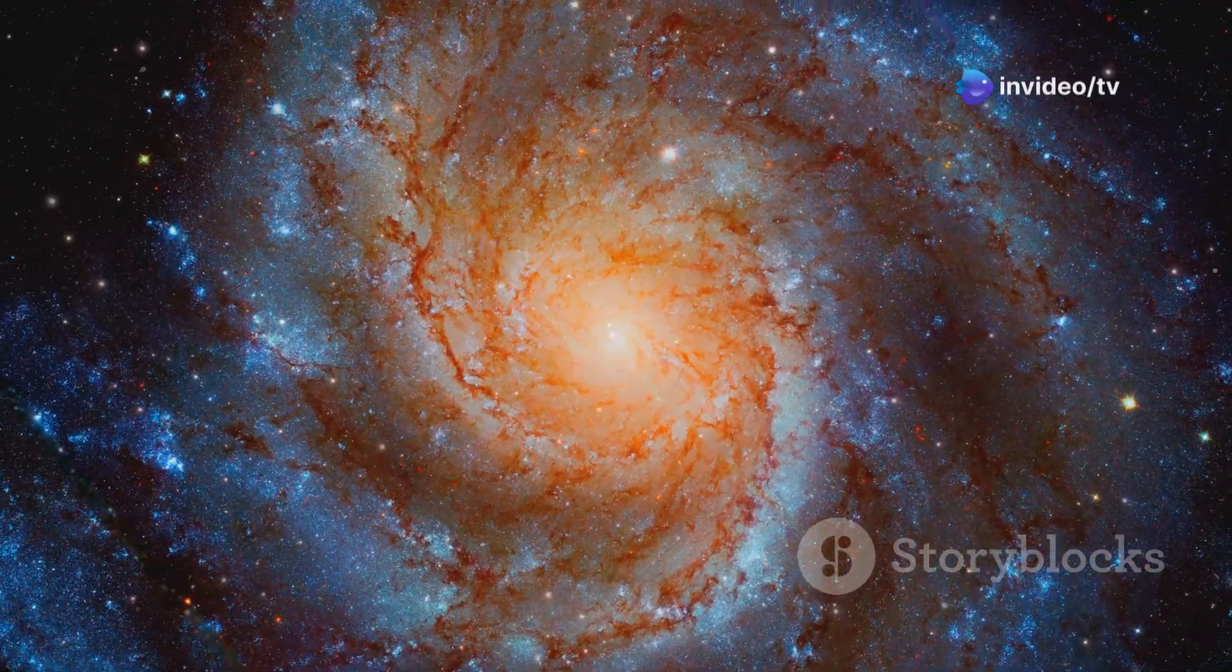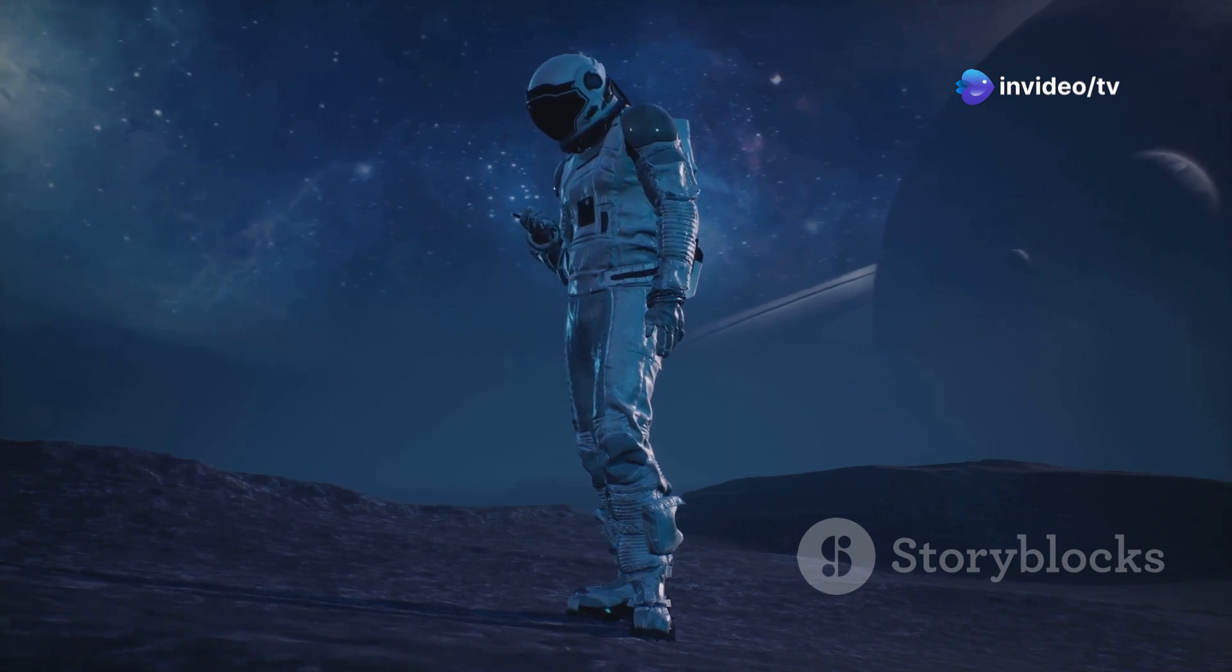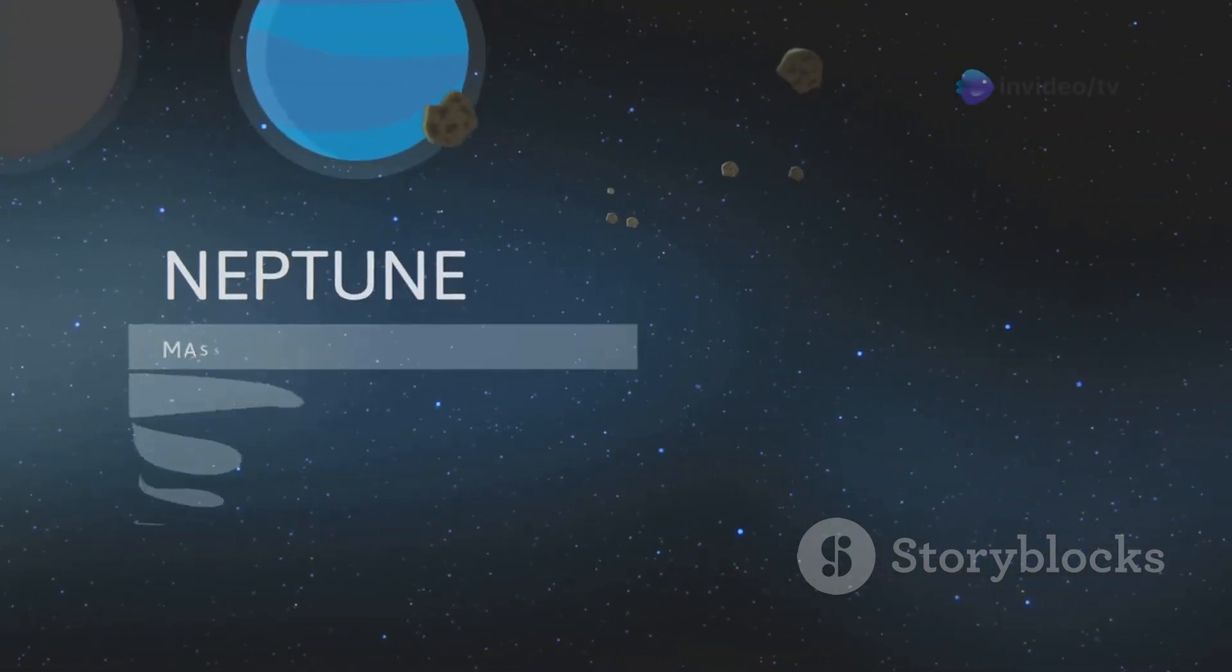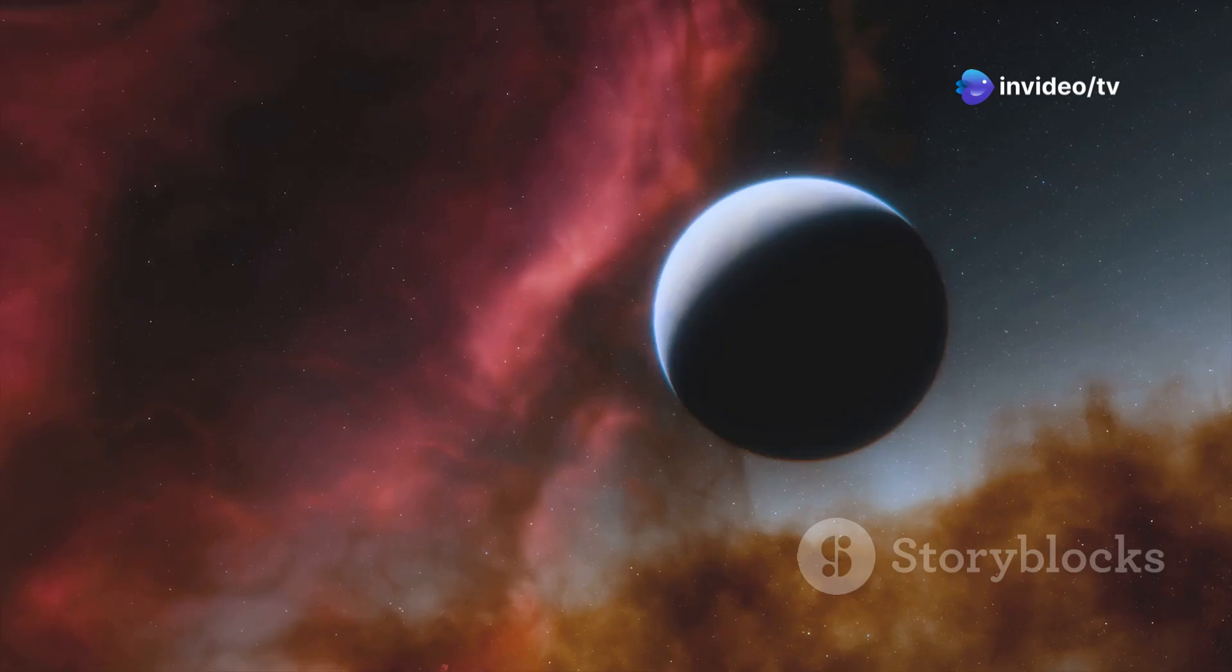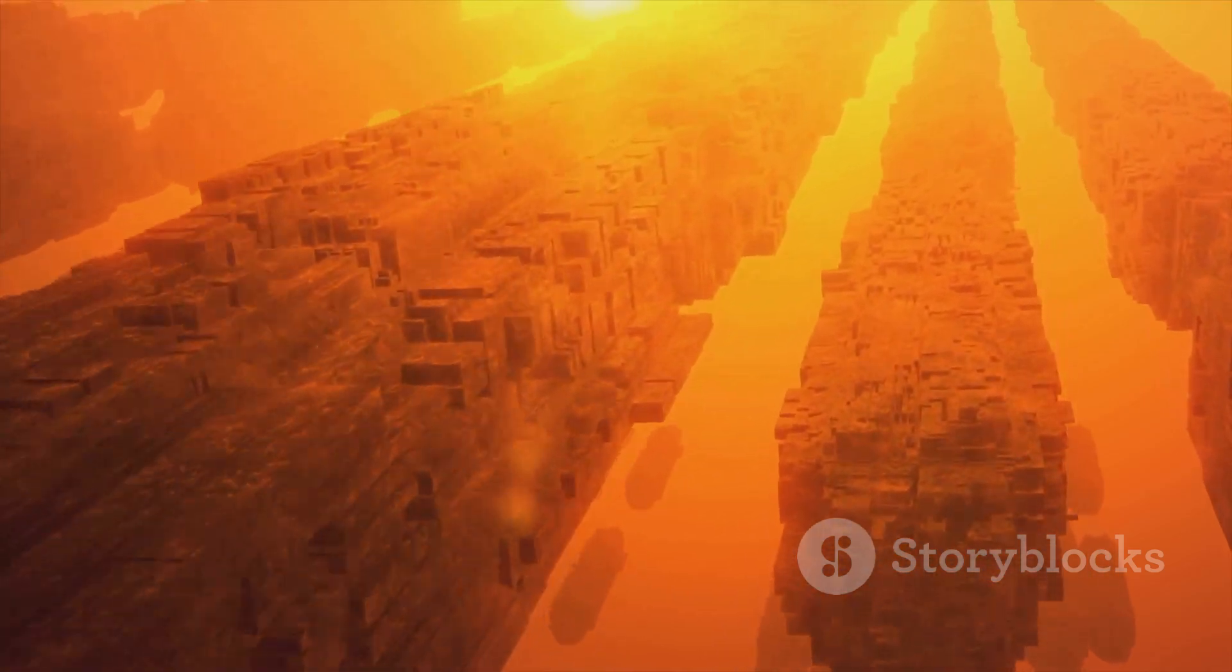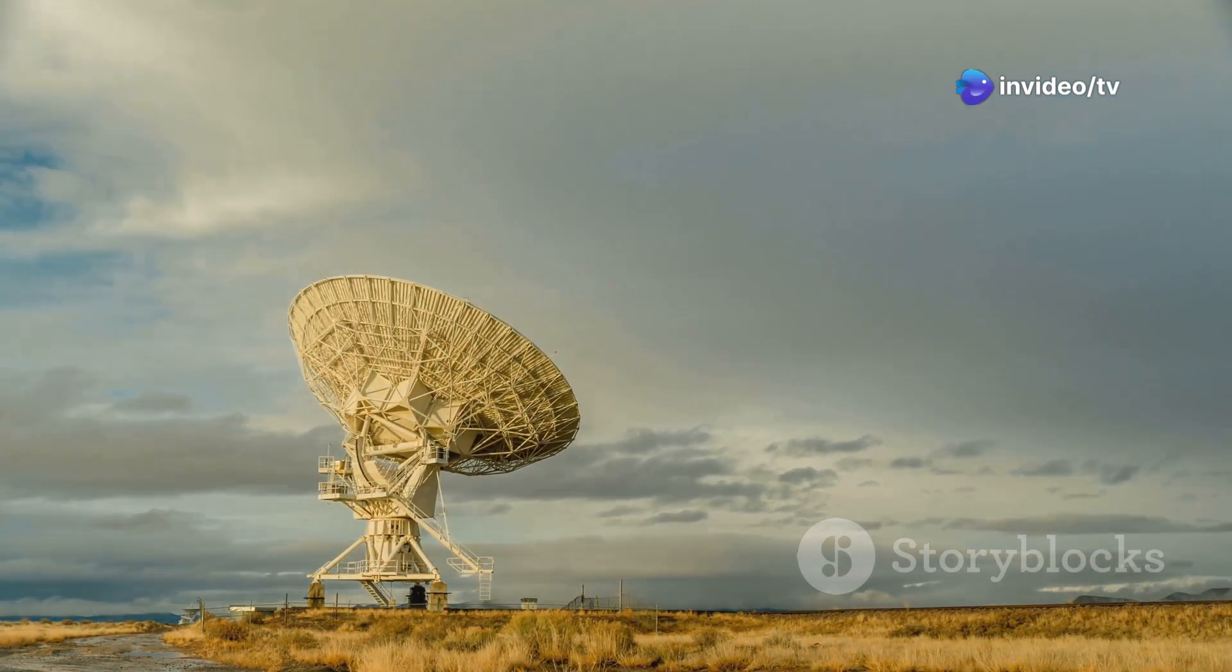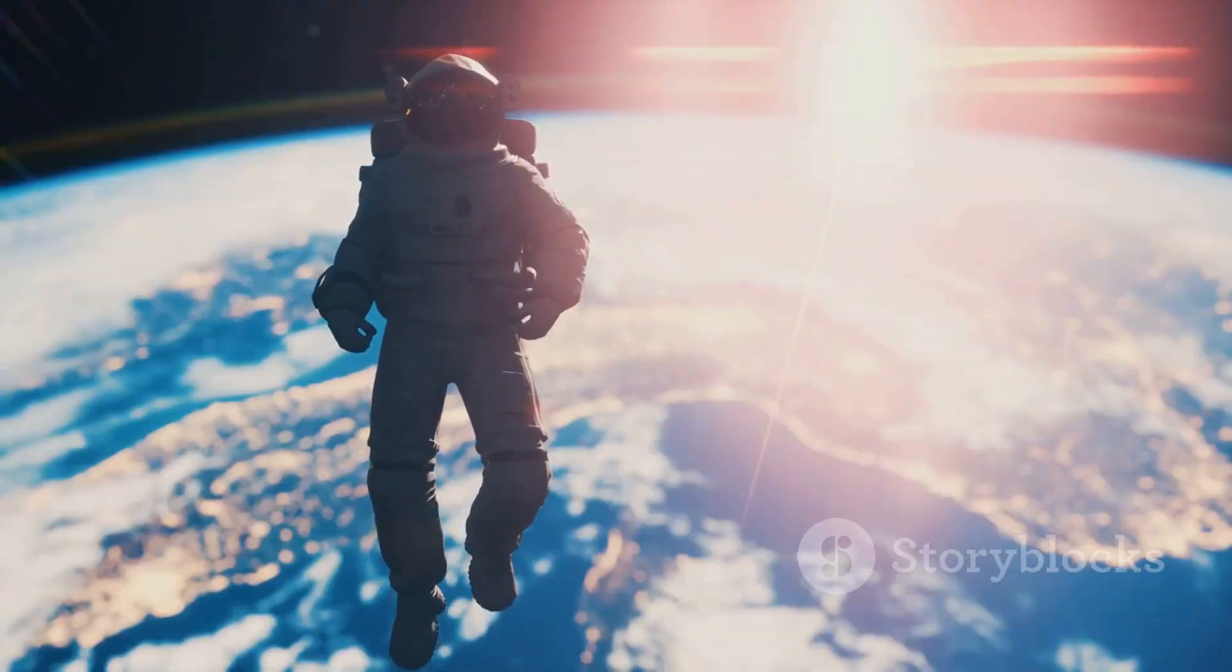The discovery that our solar system is just one of billions in the Milky Way, and that the Milky Way is just one of billions of galaxies, has profound implications. It forces us to confront the possibility that we are not alone in the universe. If there are so many stars and planets, it seems statistically improbable that life would have arisen only on Earth. Somewhere out there in the vast expanse of the cosmos, other life forms may exist. The search for extraterrestrial life is one of the most compelling quests in science.